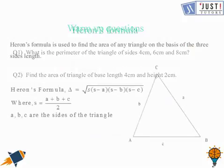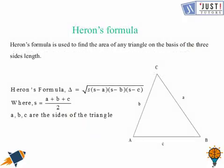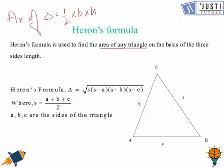Now we move ahead and we are going to learn about Heron's formula. Heron's formula is used to find the area of any triangle on the basis of the three sides. But as we know that area of triangle is half times base into height. But we can use this formula only when we know the height. But if we know the three sides of the triangle,